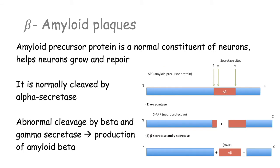Let's talk about these beta-amyloid plaques first. In the neurons, we have a protein called the amyloid precursor protein. It is a normal constituent of neurons and is believed to help neurons grow and repair. In normal physiology, it is cleaved by alpha-secretase to form two peptide fragments. And this is neuroprotective — that's what's supposed to happen.